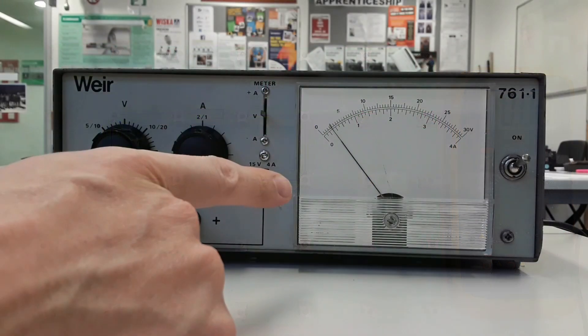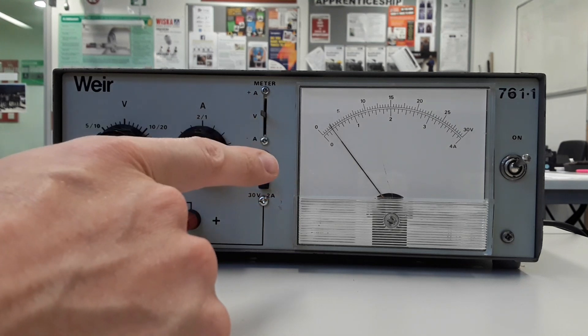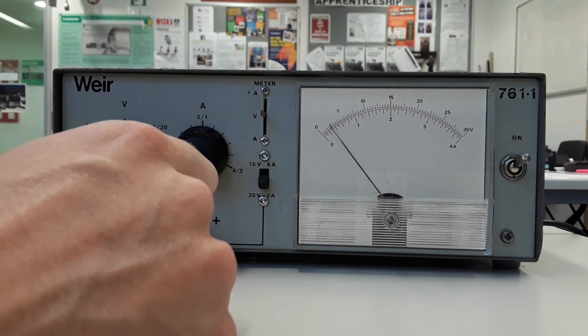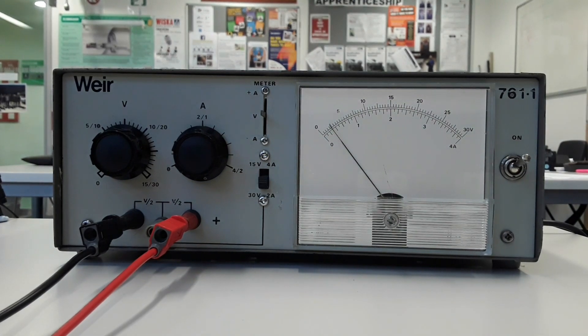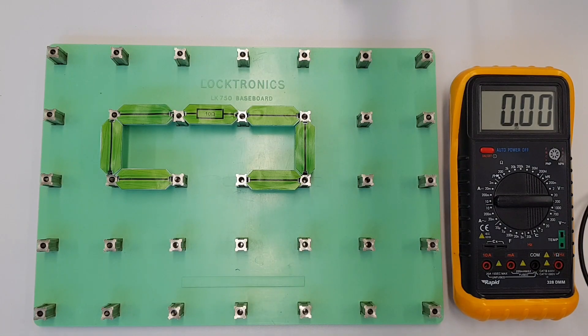So first of all we've got our power supply over here, so this device is outputting a DC voltage for us and we can set this to whatever value we want up to 30 volts. I've got this set to about 2 volts at the moment, so I'm just going to plug in my meter to double check that voltage output.